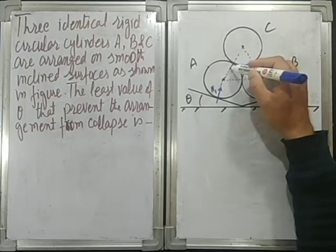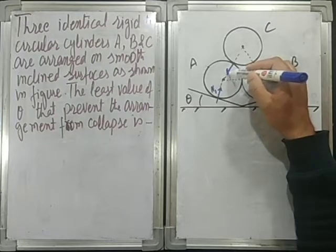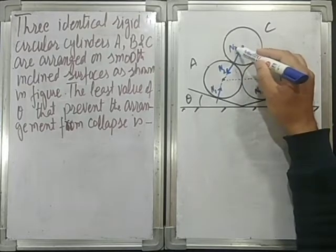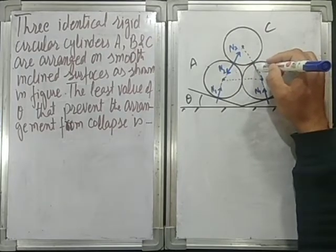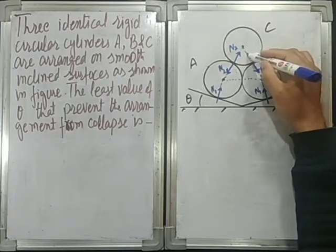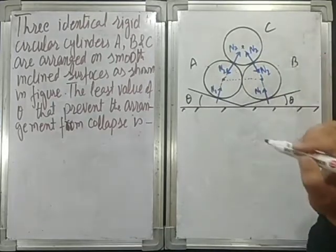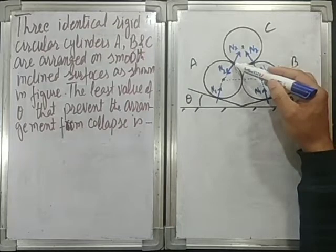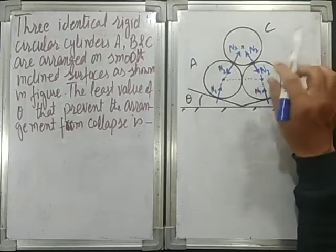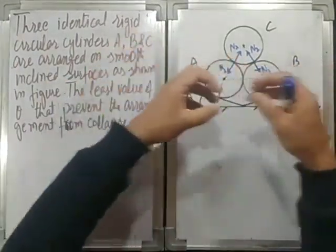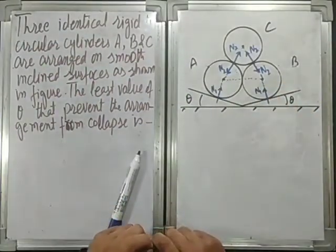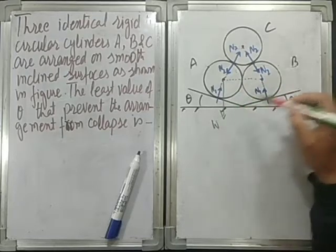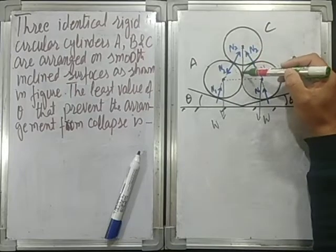The normal force from C is along the radius, since normal force on a curved surface is perpendicular to the surface — let's call this N2. By symmetry, C gives N2 to A and N2 to B, and both A and B give N2 back to C. The contact between A and B has normal force equal to zero because A and B are just touching — they are on the verge of separation. All three cylinders have the same weight W since they are identical.